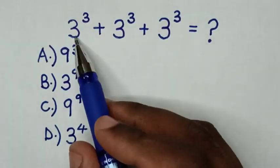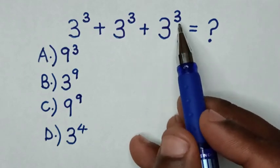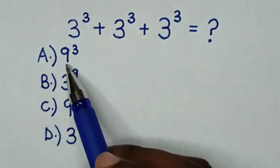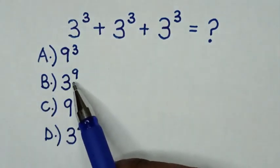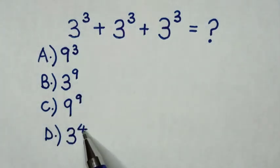Hello! How to solve 3 power 3 plus 3 power 3 plus 3 power 3 by selecting between the answers: A, 9 power 3; B, 3 power 9; C, 9 power 9; D, 3 power 4?